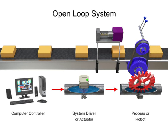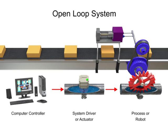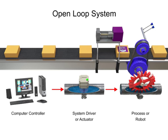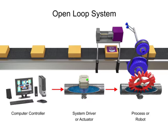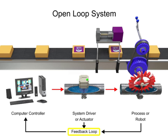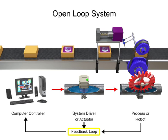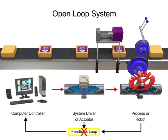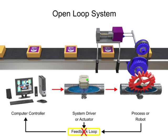In an open-loop system, the signals that go from the computer to the system driver to the robot are never checked with a feedback loop to ensure that the robot has completed its task.